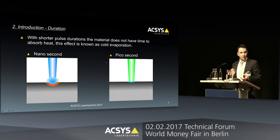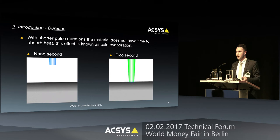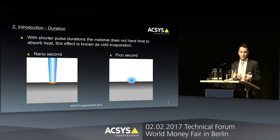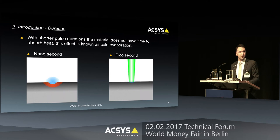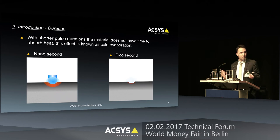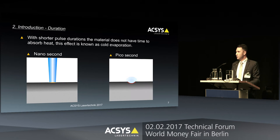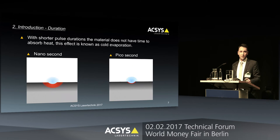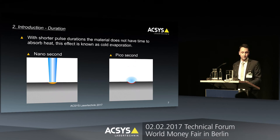To make things a little bit more clear and to show the difference between these two laser sources, we prepared a simulation. On the left side, we see the nanosecond laser, which stays too long on the surface, building up a heat affected zone. On the right side, the picosecond laser is way shorter, so we have a cold evaporation without any thermal effect on the material.